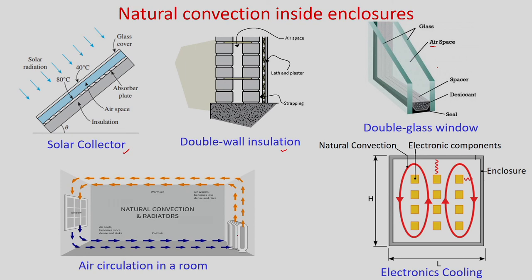Another application is air circulation in a room. You have a radiator and from the radiator hot air will go up, travel horizontally, then come to the window where it will be cooled and travel back. This air circulation in a room is also an application of natural convection in enclosures. In electronic cooling, chips will be mounted and if kept horizontally, there will be natural circulation inside the enclosure.